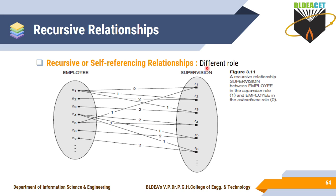Here, one employee is playing multiple roles. The employee entity type is related to itself — one instance plays the role of employee and another plays the role of supervision. Role 1 indicates the employee role and role 2 indicates the subordinate role. Such relationships are called recursive or self-referencing relationships, where the same entity type is related based on different roles.